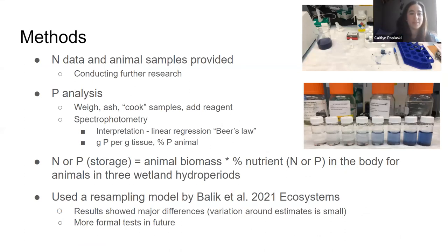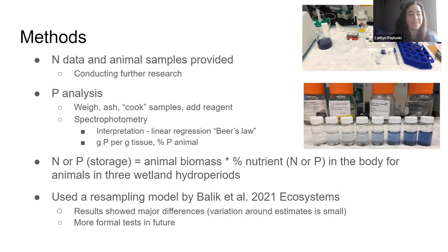Along with the samples for phosphorus analysis that were provided to me, I was also provided with the nitrogen data already, and I conducted further research with that data and the data I collected in the lab. For phosphorus analysis, I weighed out an appropriate amount of each sample, ashed them, cooked them in a water bath, added a working reagent to do spectrophotometry, then recorded the absorbance amounts and interpreted through linear regression in Excel the percent P in the body of each sample. This took several weeks because we had to do it in several different batches due to the number of samples. The biomass data from Dr. Bailick's paper was then combined with the percent P and percent N data to get the total amount of nutrient storage in each taxa as well as in each hydroperiod. A resampling model was used when working with the data, but more formal tests will need to be done in the future.